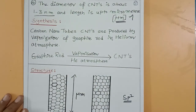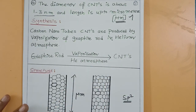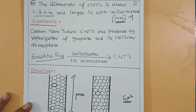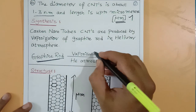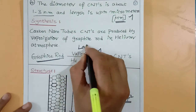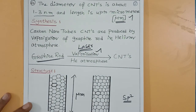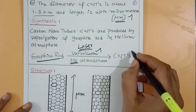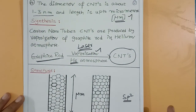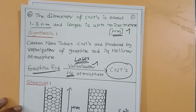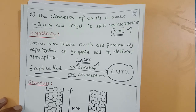Now for synthesis — how we produce carbon nanotubes. Carbon nanotubes are produced by the vaporization of a graphite rod. Using graphite electrodes, vaporization is carried out with high energy laser beams in a helium atmosphere. When the graphite is vaporized using the laser in helium atmosphere, carbon nanotubes are produced. That is the synthesis method of carbon nanotubes.